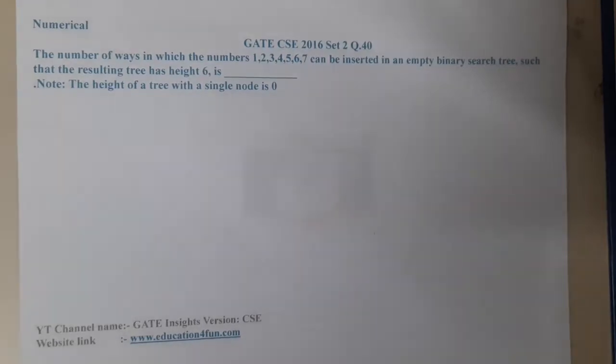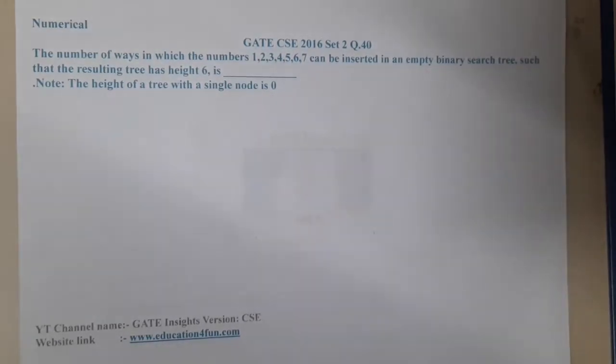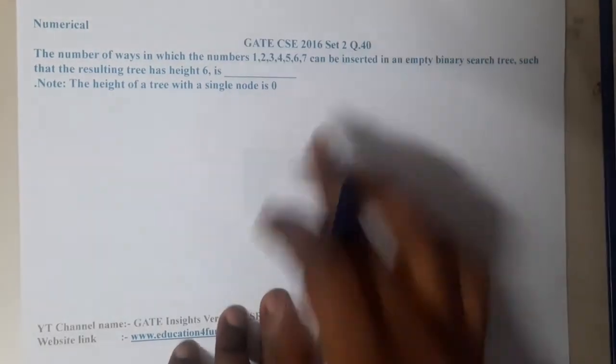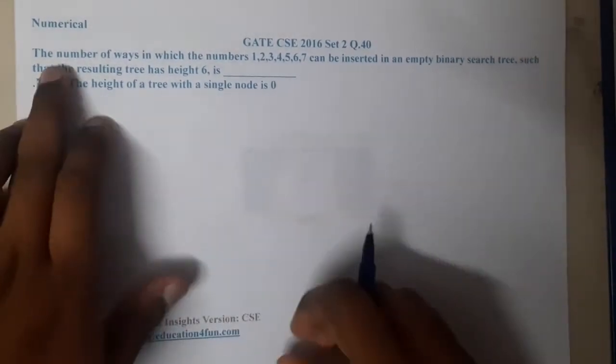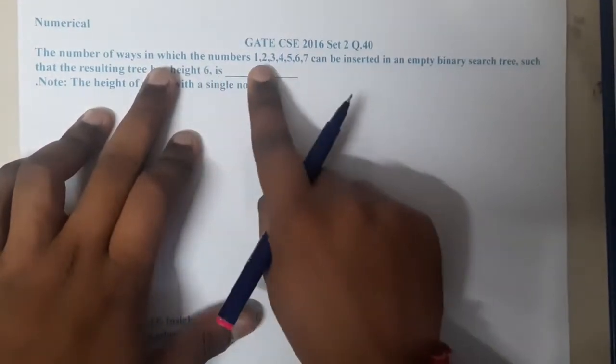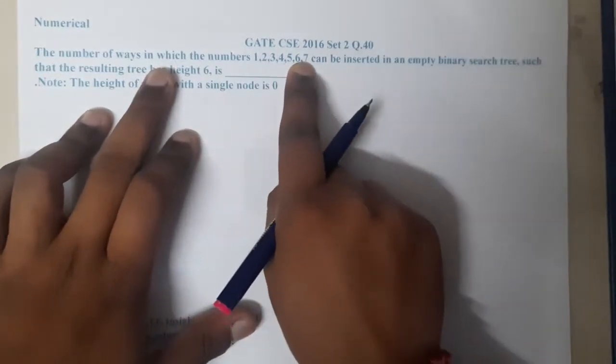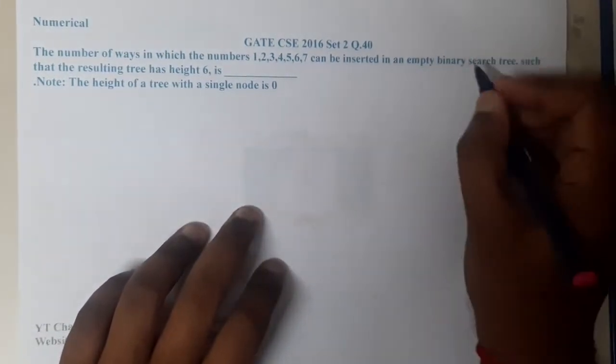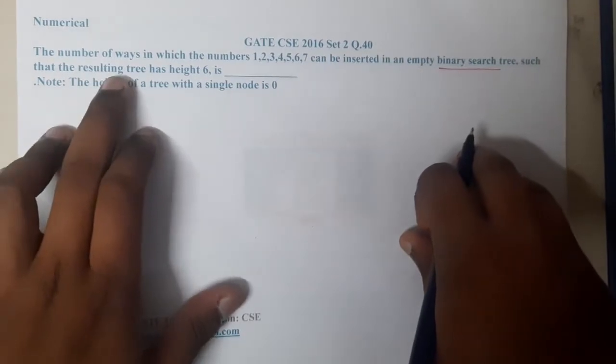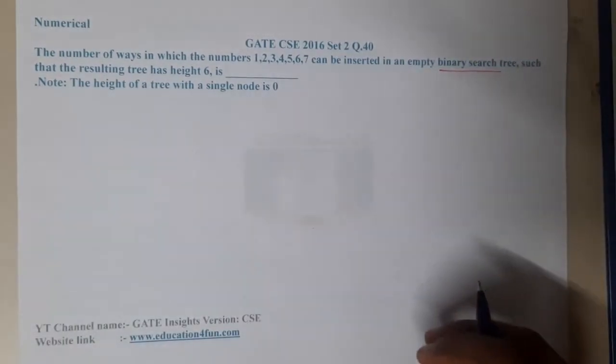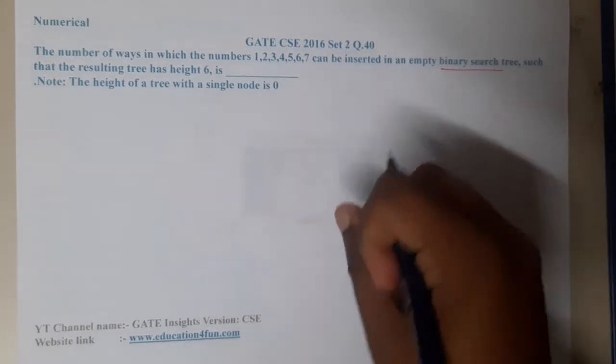Hello guys, we are back with our next lecture. In this lecture, let us go through the next question. The question is GATE CSE 2016 Set 2 Question 40. The number of ways in which the numbers 1, 2, 3, 4, 5, 6, 7 can be inserted into an empty binary search tree such that the resulting tree has height 6. So here we are forcing the height to be 6.